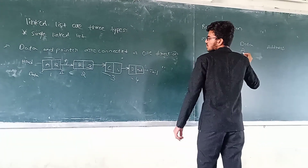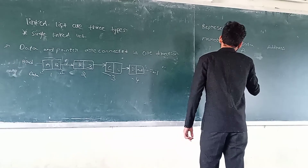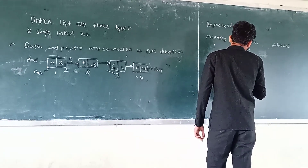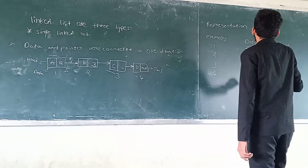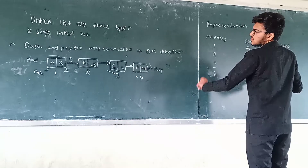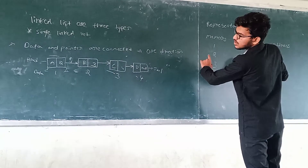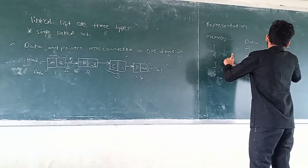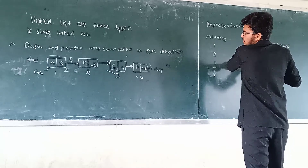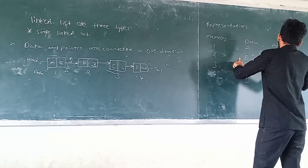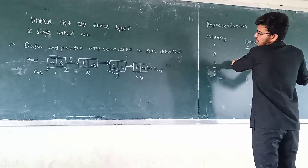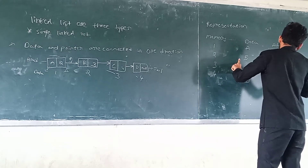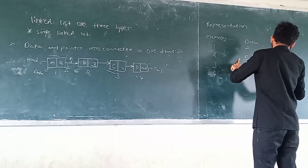In the first node, second node B, 12, 1, C, 4th, 1, D. The address of the first node is 2, address of the second node, address of the third node, and the 4th node is null.